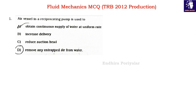Welcome to Fluid Mechanics MCQ. This is a TRP 2012 production. Question 1: An air vessel in a reciprocating pump is used to — Option A: obtain continuous supply of water at uniform rate; Option B: increase delivery; Option C: reduce suction head; Option D: remove any entrapped air from water.